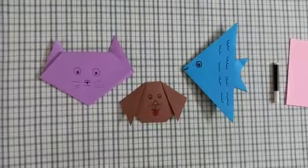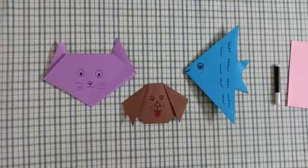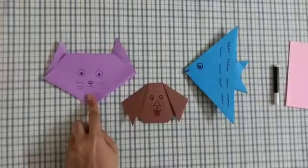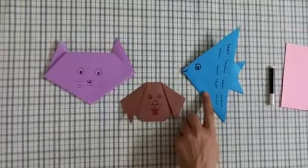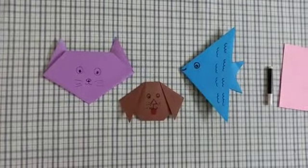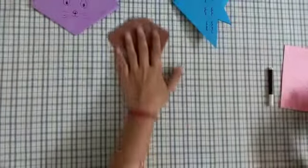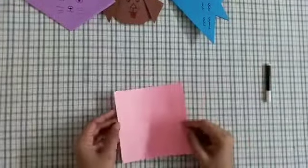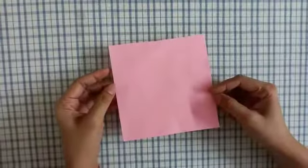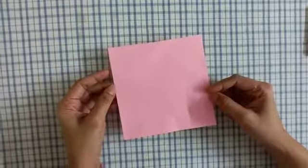Hello kids! Earlier we made three pet animals: cat, dog, and fish. Today we'll be making a rabbit. For this activity, we need a square-shaped paper. I've used pink color paper, but you can use any color of your choice.